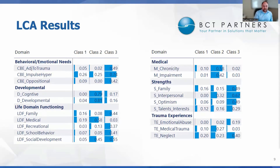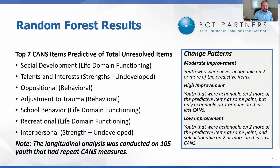To further examine how these kids function once they're in the program, we had 105 of the initial 175 youth with repeated measures. We ran a random forest regression on the total number of unresolved items and found seven items that were highly predictive of having a high number of total unresolved items: social development, talents and interests, oppositional, adjustment to trauma, school behavior, recreational, and interpersonal. Notably, interpersonal and talents and interests came from the strengths domain — these represent undeveloped strengths that kids have not yet developed. The longitudinal analysis was conducted only on those 105 youth with repeated measures.